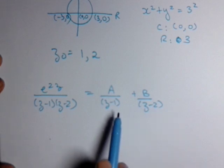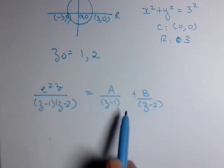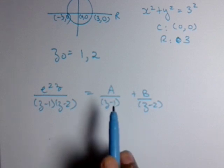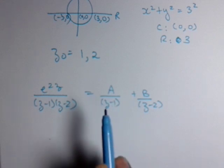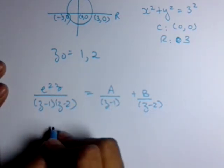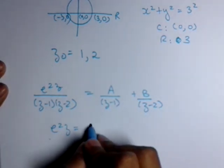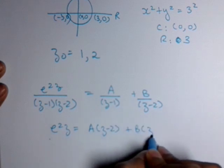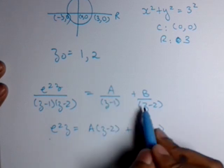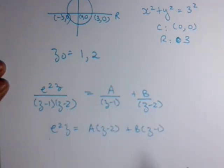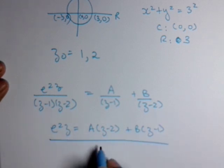So now we have to find the value of the constants A and B. On cross multiplying, we get e raised to 2z is equal to A(z minus 2) plus B(z minus 1). The denominator will cancel out from both sides.